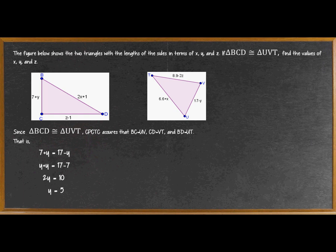By addition property of equality, Y plus Y equals 17 minus 7, which gives us 2Y equals 10. When we divide both sides by 2, we get Y equals 5. So our answer is Y equals 5.